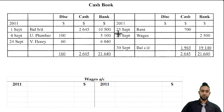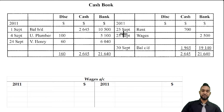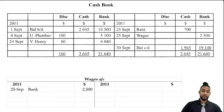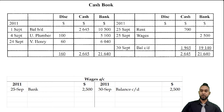For the wages account, on the 25th of September there is a payment by check — we know it's by check because it's under the bank column — of $2,500. Since it's on the credit side of the cash book it goes on the debit side of the wages account. There were no other transactions in respect of wages, so we balance the account at $2,500, total both sides, and bring the balance down on the debit side.